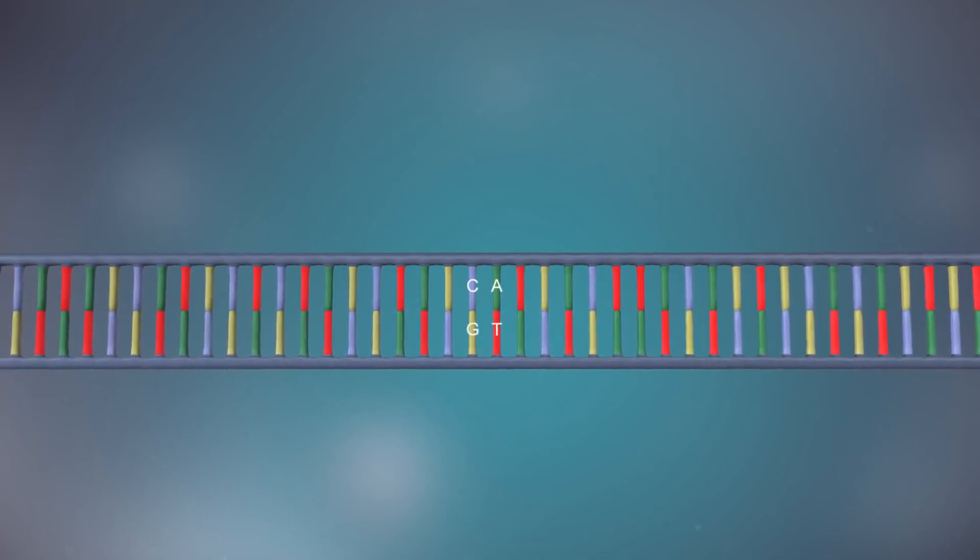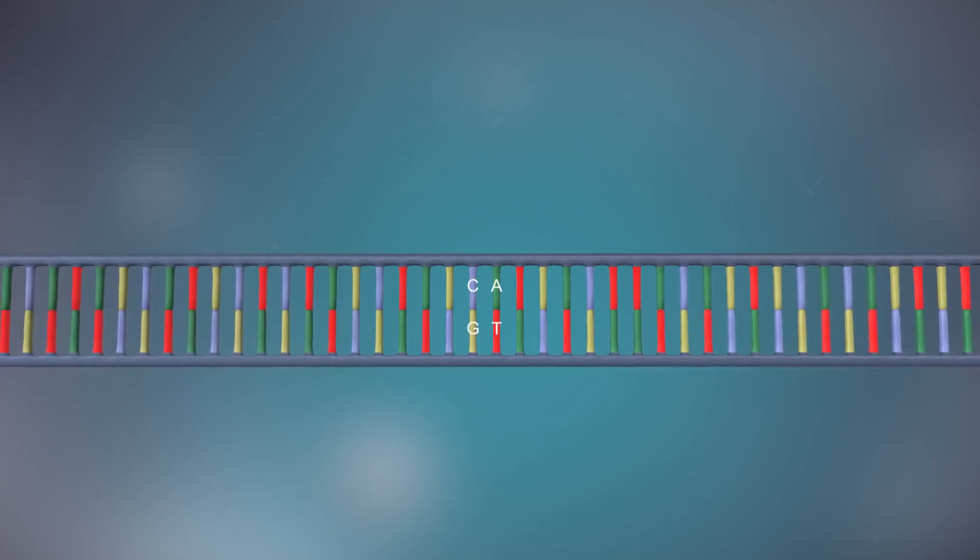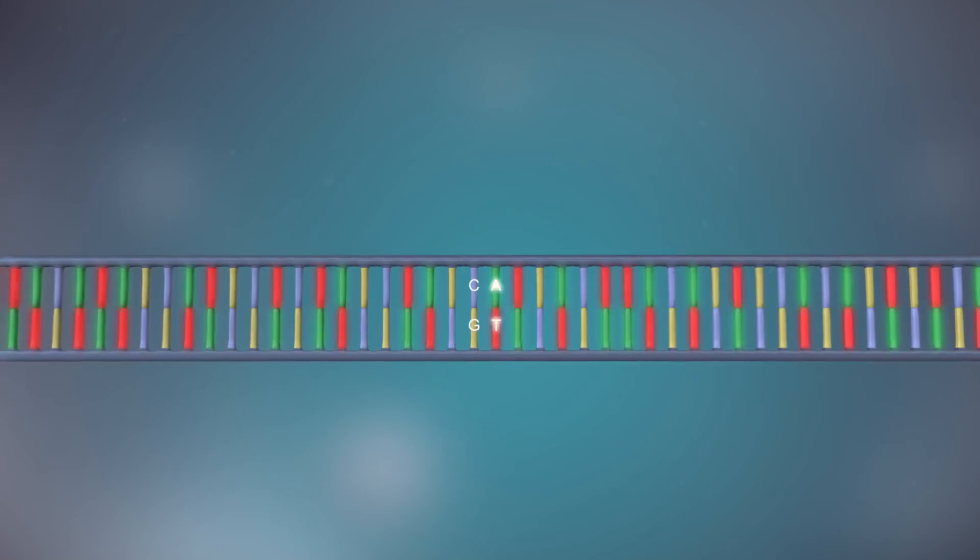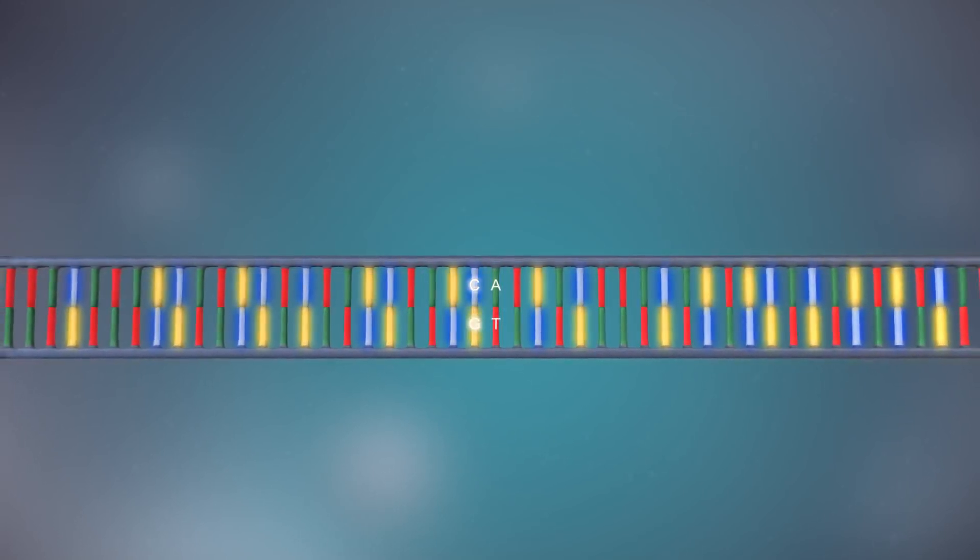The two strands are complementary. This means that wherever there's a T in one strand, there will be an A in the opposite strand, and wherever there's a C, there will be a G in the other strand.